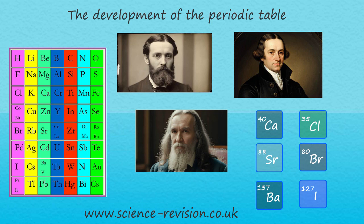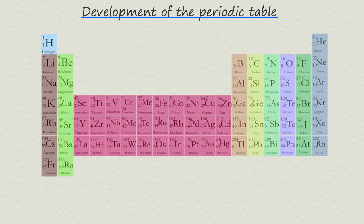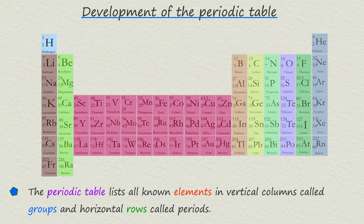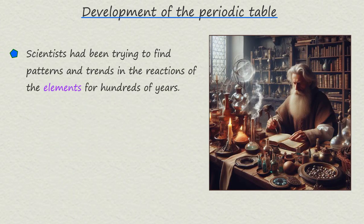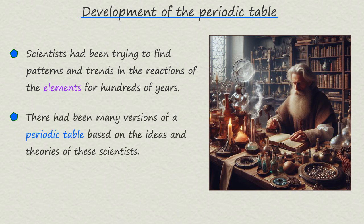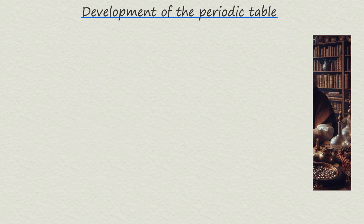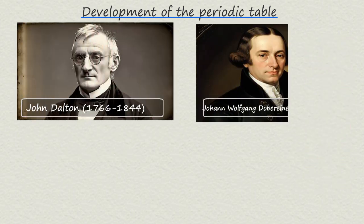In this video we will look at how the work of the scientists John Dalton, Johan Wolfgang Döbereiner, John Newlands and Dmitry Mendeleev led to the development of a periodic table of elements. The periodic table is an indispensable tool for any chemist. This iconic table with its rows and columns of elements represents centuries of scientific inquiry, discovery and innovation. In this video we will focus on the work of just four scientists.